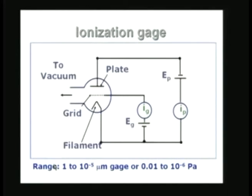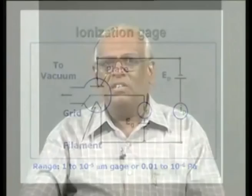The ionization gauge can also be replaced by what is called a Penning gauge. The working principle is the same; the only difference is that in the Penning gauge, the filament is not hot. Instead, a very large potential difference is used, so ionization of the residual gas takes place due to the high electric field near the cathode. So the way ionization takes place is different. The Penning gauge is also called a cold cathode gauge.